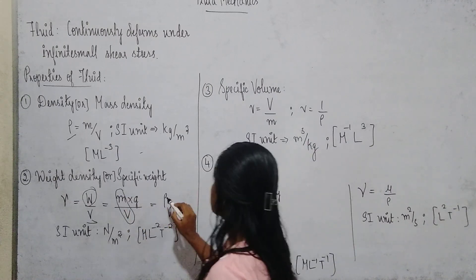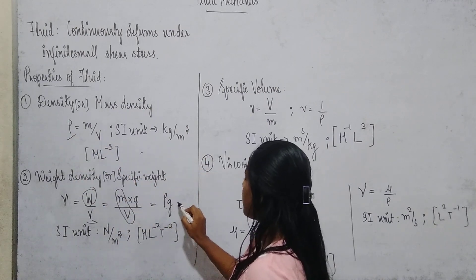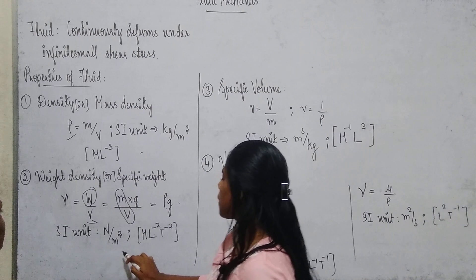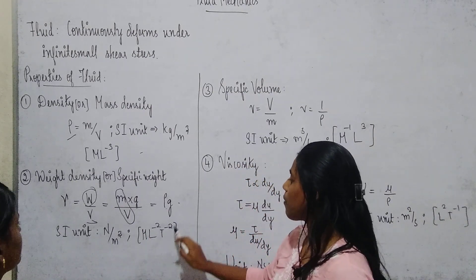M by V tells us, we know that M by V is rho, that is density. So density into g. SI unit is Newton per meter cube and the dimension is M L^-2 T^-2.